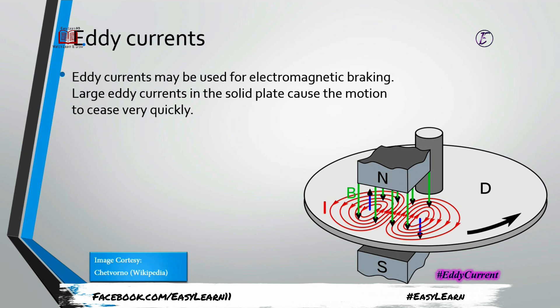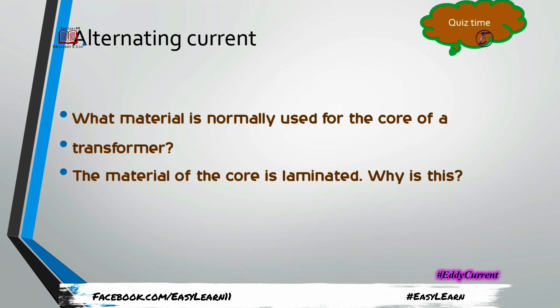Large eddy currents in the solid plate cause the motion to cease very quickly. The higher the speed of rotation, the more eddy current is induced, and it is always acting against the motion, trying to stop it — working as a brake system. By removing the north-south magnetic poles, the disc is free to rotate again; by turning on the electromagnet, it acts as a brake.